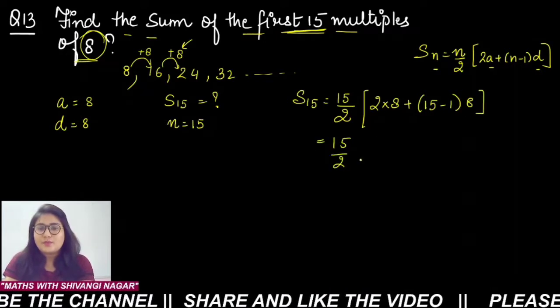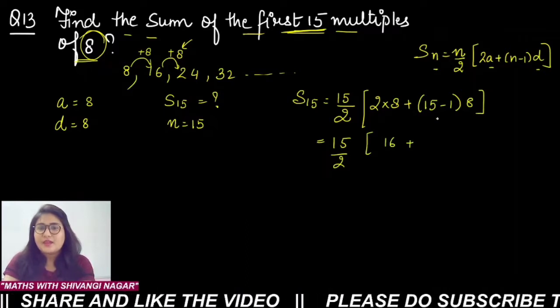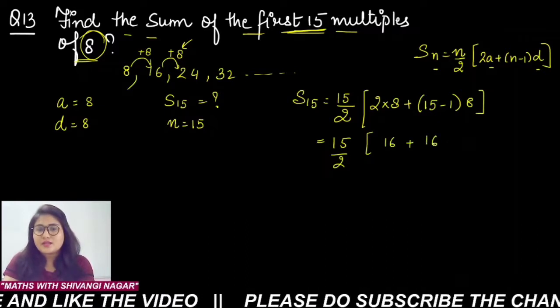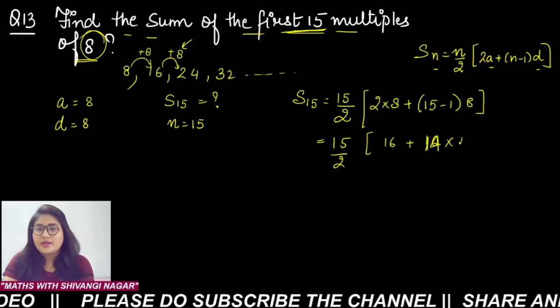15/2 multiply by 2 into 8 is 16, then 15 minus 1 is 14, 14 into 8 here, clear?